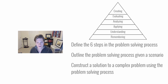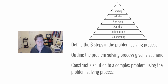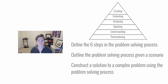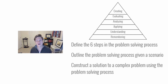There are three different objectives that are part of this course. The first: define the six steps in the problem-solving process — we simply need to remember what the six steps are. Number two: outline the problem-solving process given a specific scenario — now we're moving up a little, remembering the steps, understanding the process, and applying it to a scenario. And finally: construct a solution to a complex problem using the problem-solving process. That's reality — your boss comes to you and says 'fix this,' and we need to create a solution. That's higher-order thinking skills.